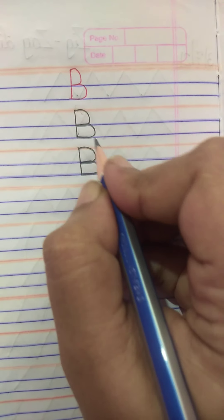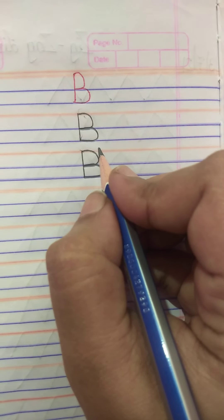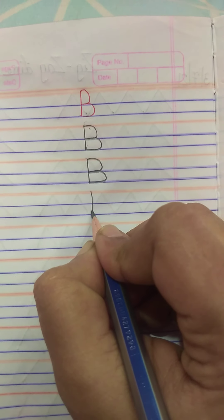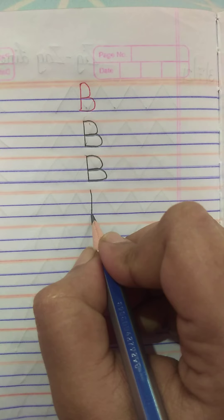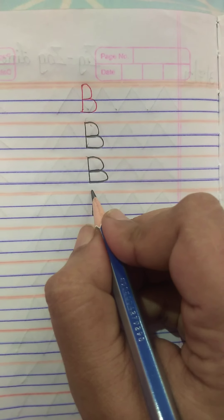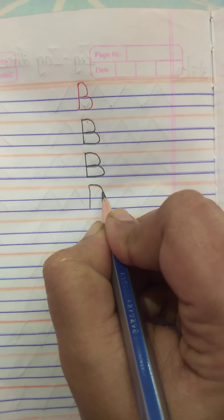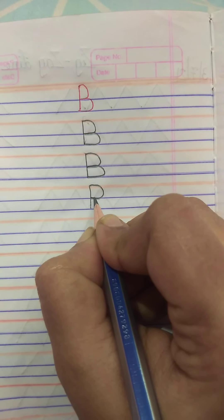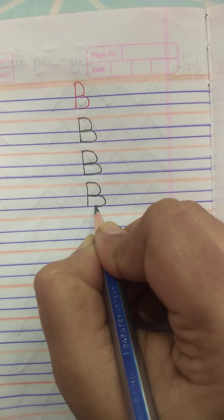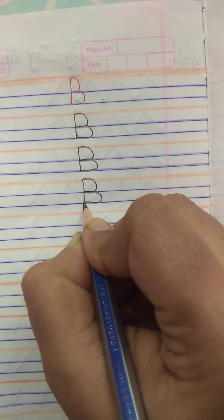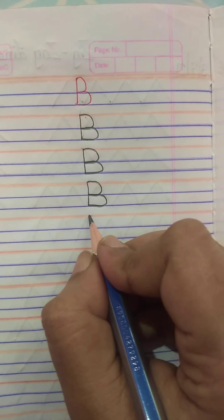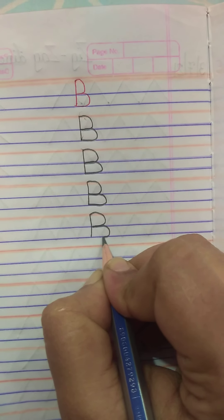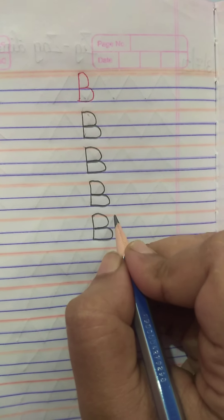One standing line and two curves makes letter B. Did you all understand how to write capital B? Standing line from red line to second blue line. Then make a curve from red line to first blue line, touch the standing line. Make one more curve from first blue line to second blue line, touch the standing line. This is your letter B, capital B. Write slowly and neatly, and make sure your alphabet should be within the lines — red line and two blue lines.